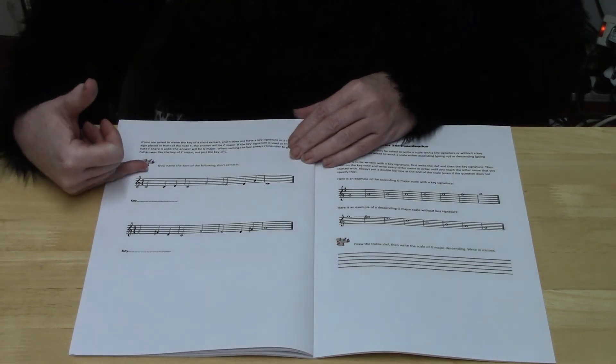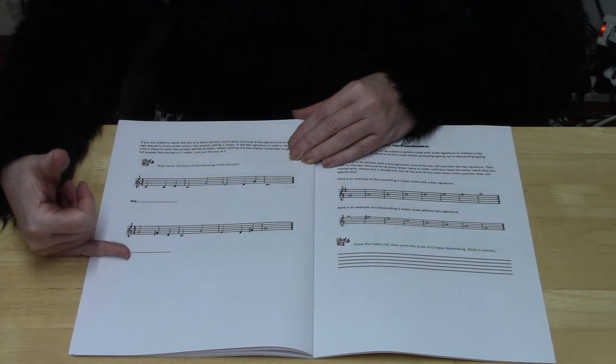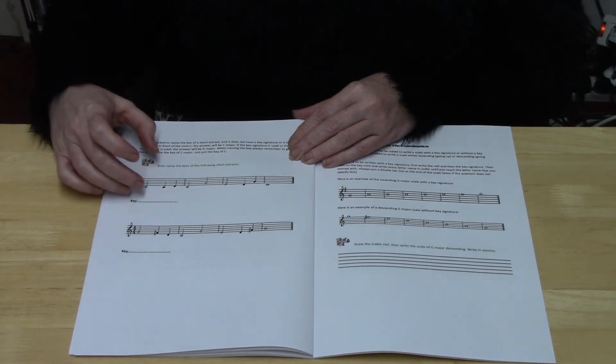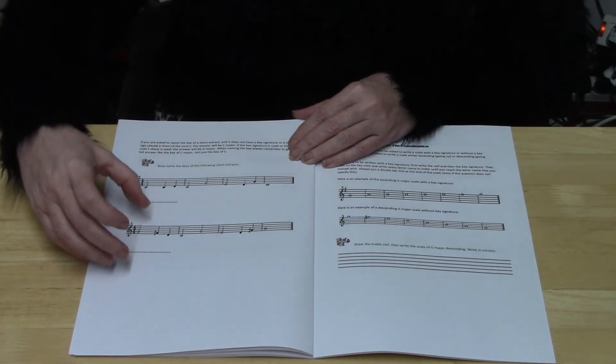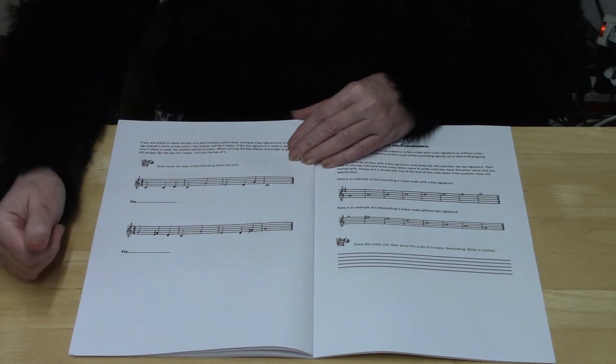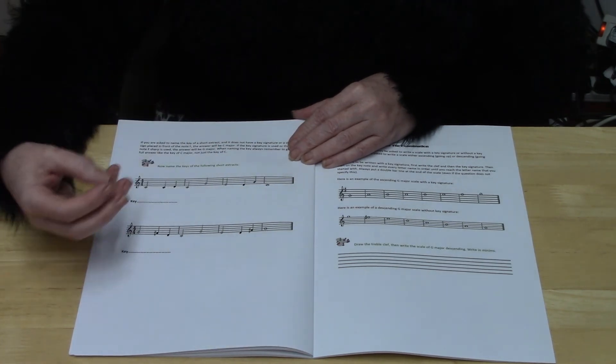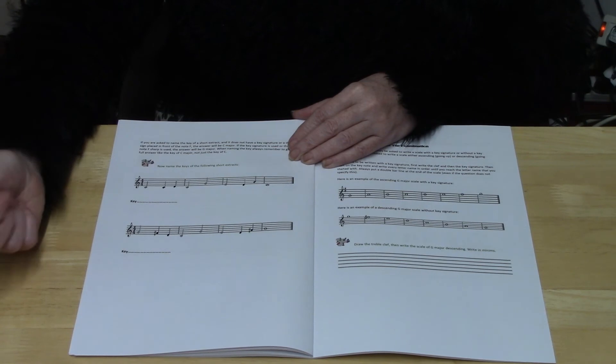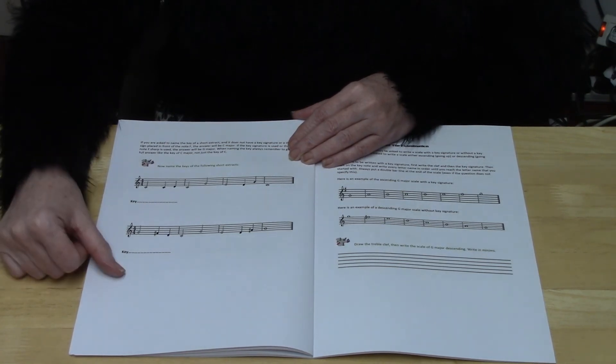Then you have two examples of pieces. The first one has no sharps or flats in and the second one has F sharps written in. And so the question asks you to name the key of the piece.